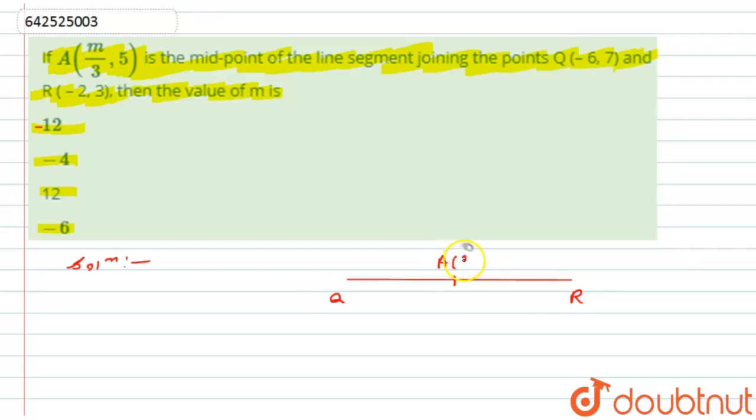That is A with the coordinates (M/3, 5). Now the coordinates of Q are given to us, that is (-6, 7) and coordinates of R are given to us, (-2, 3).